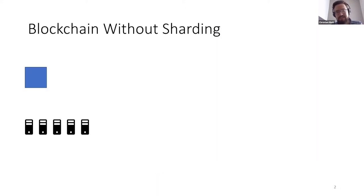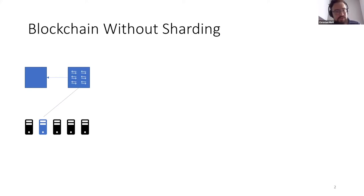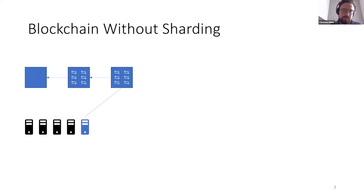This is a talk about sharding. Most of you know what sharding is and why it's useful, but just to make sure we're all on the same page, let me give a short introduction. If you have a blockchain that does not use sharding, like Bitcoin, the rough high-level idea is that you start with a Genesis block, you have a set of nodes, and there's some way to select a node who will make a block appended to the Genesis block and include transactions in it, and then all the other nodes will verify this block. This process keeps repeating.